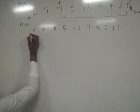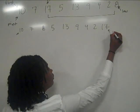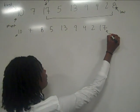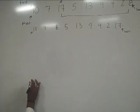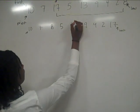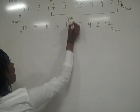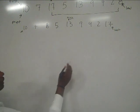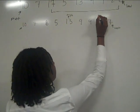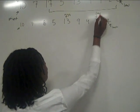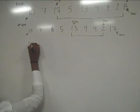Again, you have your first and last values, and the pivot is still 10. You again look for the first number from the left that is greater than 10, which is 13 — this is your high. And the first number that is less than 10 from the right, which is 2 — this is your low. You then swap these values and rewrite.